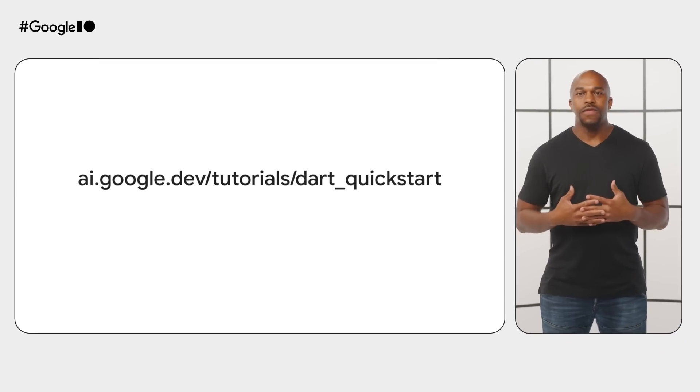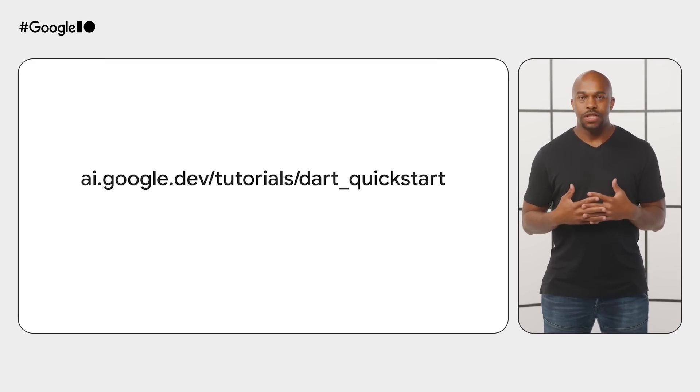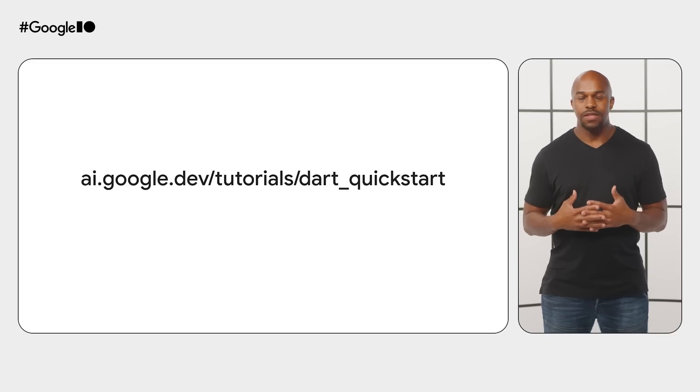Right now, you can check out this video's description for links to the GitHub repo for this app and some other useful resources. I hope you have seen the potential of building AI-driven apps with the Gemini API. And if you'd like to use the Gemini API in your Flutter or Dart apps, head to the Quick Start to get started with the Google AI SDK. We can't wait to see what you'll build.